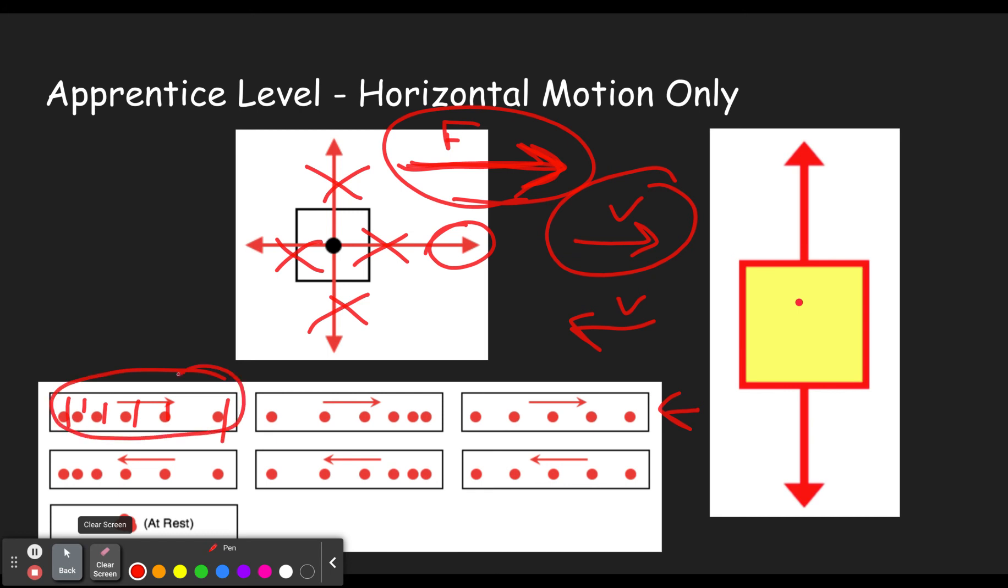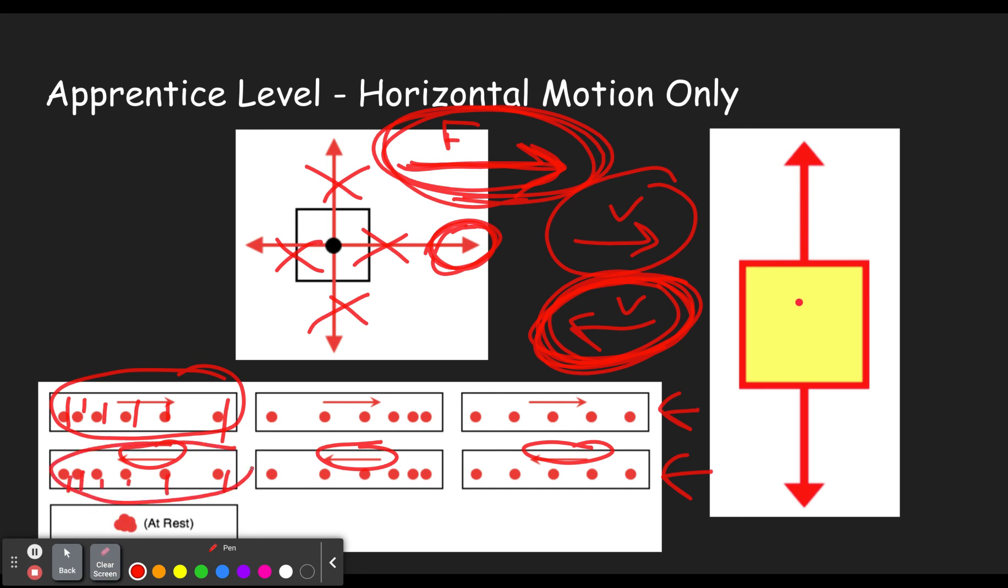Then we need to take a look at our leftward moving ones. You can see all of these have a leftward arrow. So which one of those? So now we're looking at the leftward direction. Well, if it's moving left, and being pushed right, because there was extra rightward force, then that's going to make it slow down. So it's going to start out far apart and it's going to get closer and closer together because it's slowing down. So these two options would be what you would get for this one up here.